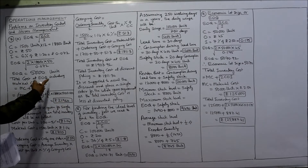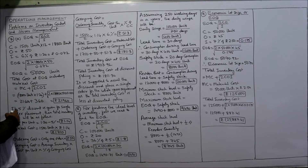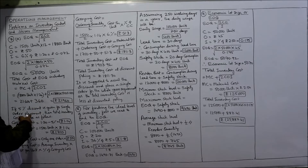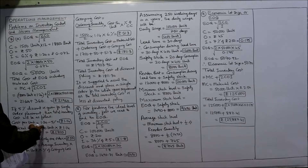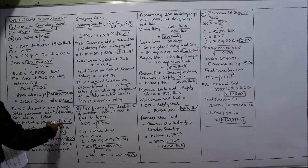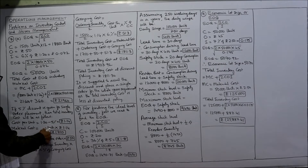This is the total cost at EOQ including material cost. Now, if a 5% discount is given for a single order placement, the cost per unit becomes 1.20 minus 5%, which is 1.14.